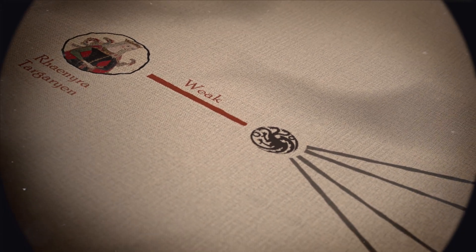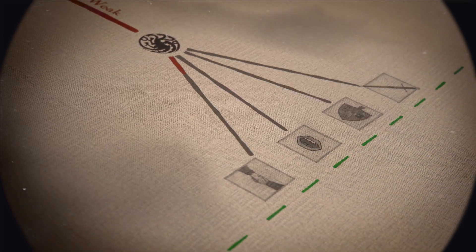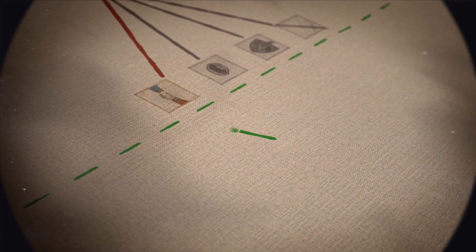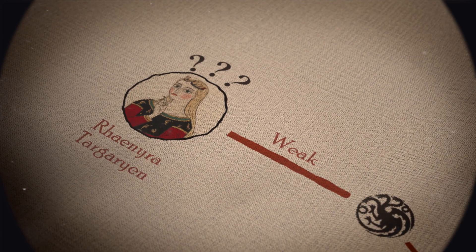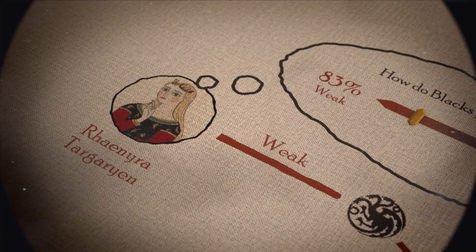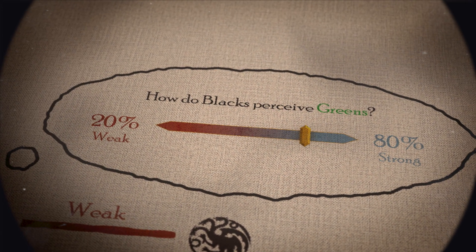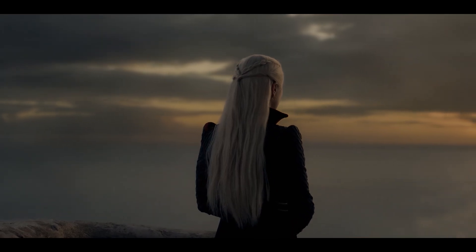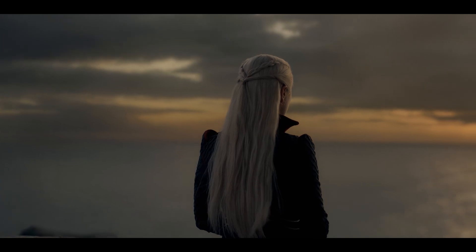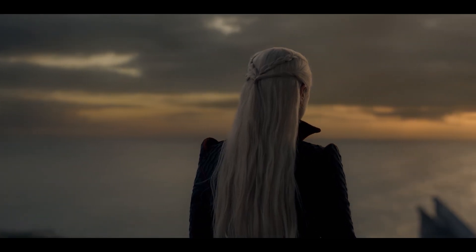When the Dance of the Dragons started, blacks believed they were weak, so they decided to form an alliance. From that decision, the greens could react by attacking, defending, bluffing, or forming their own alliances. But Rhaenyra, at this point, doesn't know if the greens are weak or strong. However, we estimated that she believes the probability of greens being strong is 80%. So according to game theory, what's the best strategy for her to follow? Defend and form alliance are incredibly safe options to pick at basically every stage of the calculation.